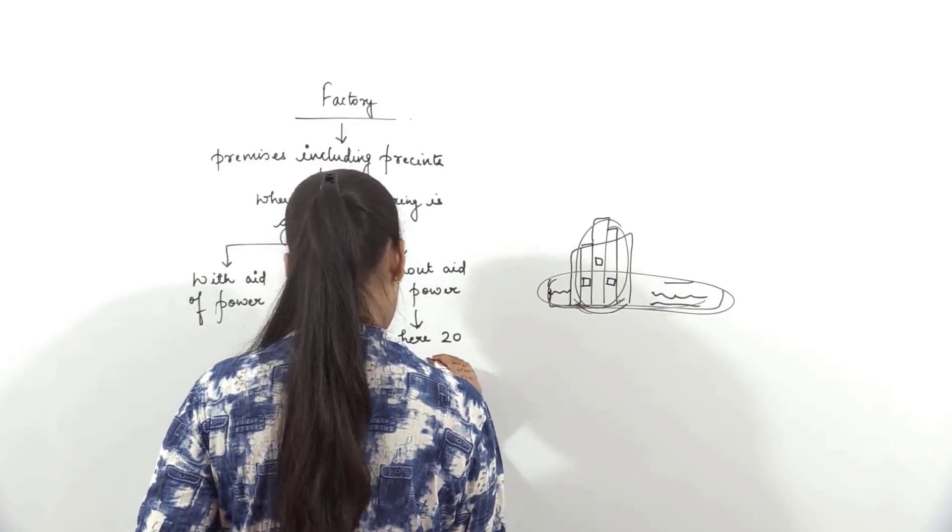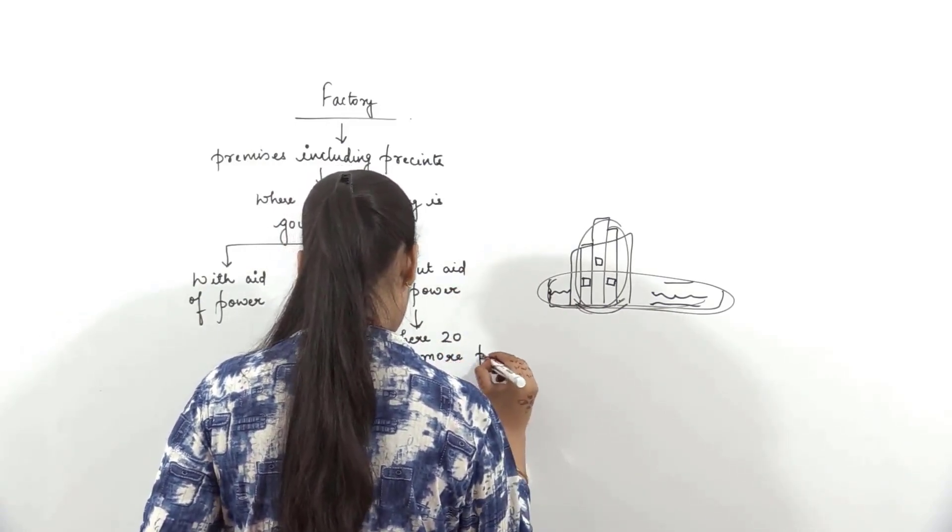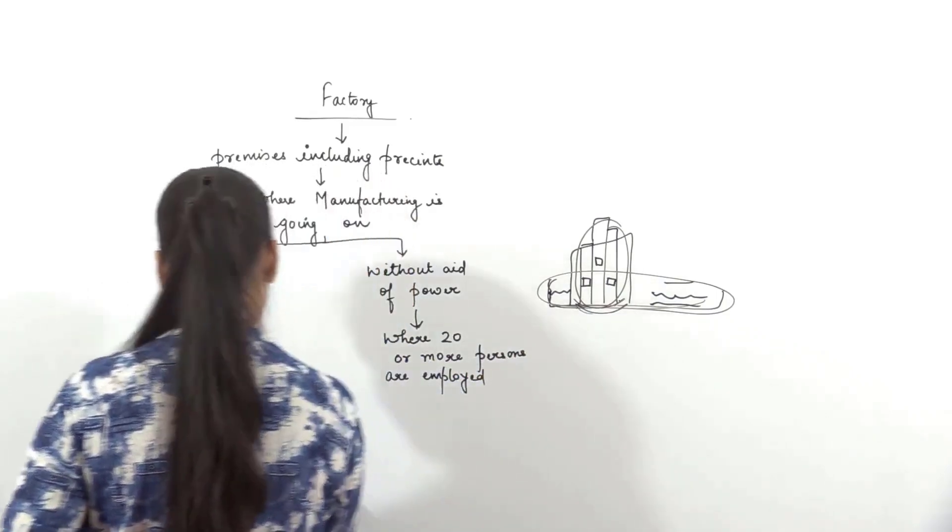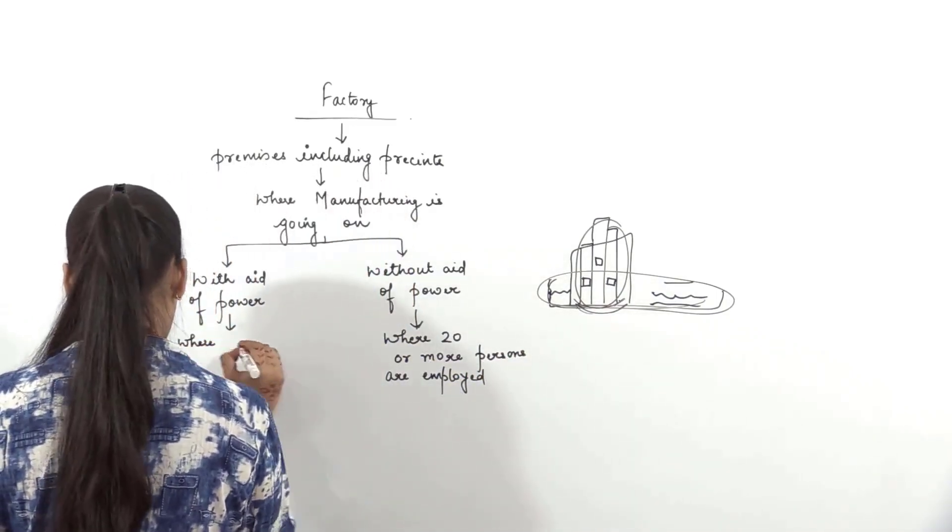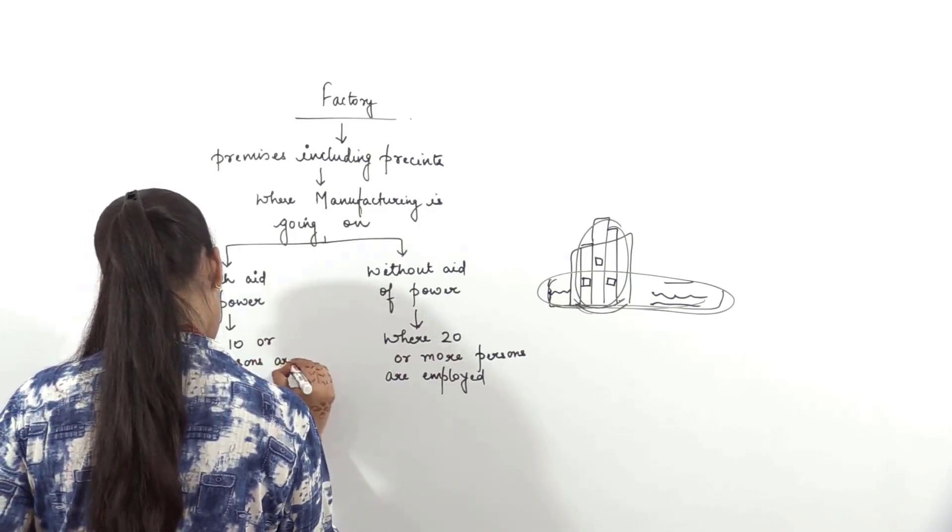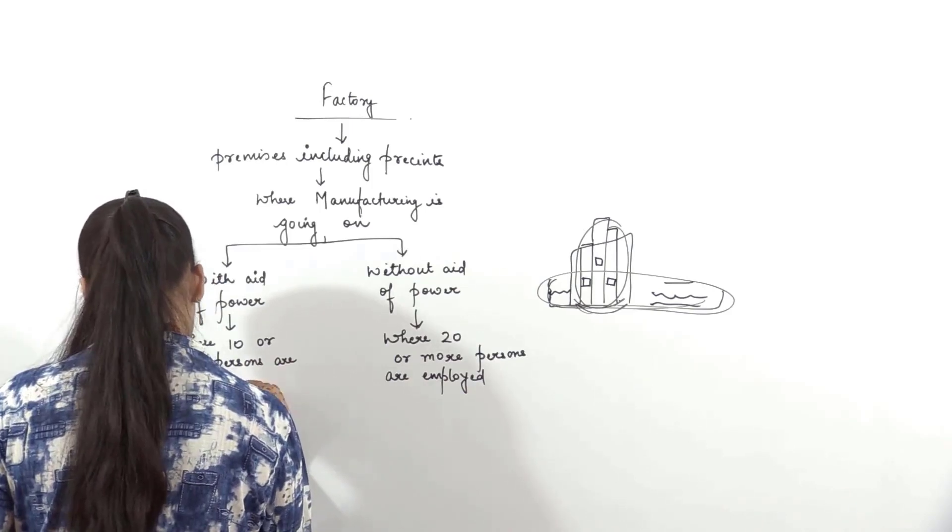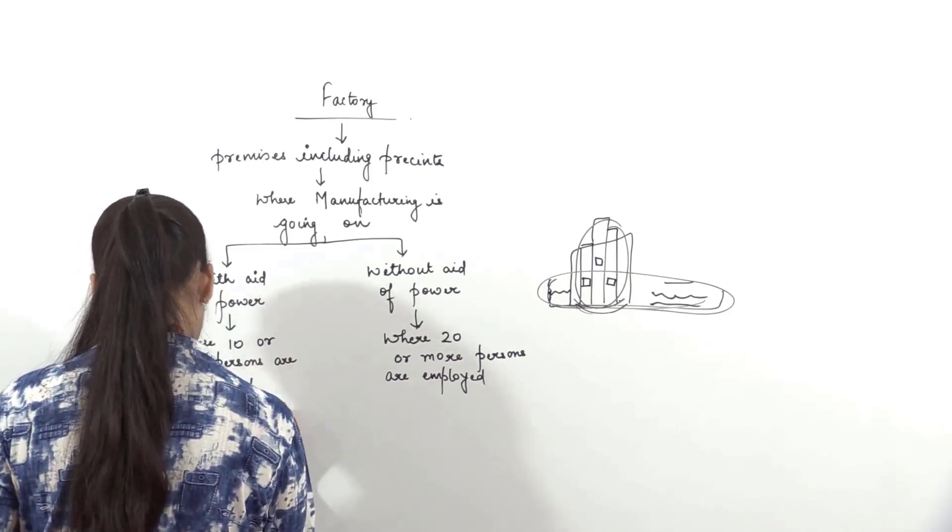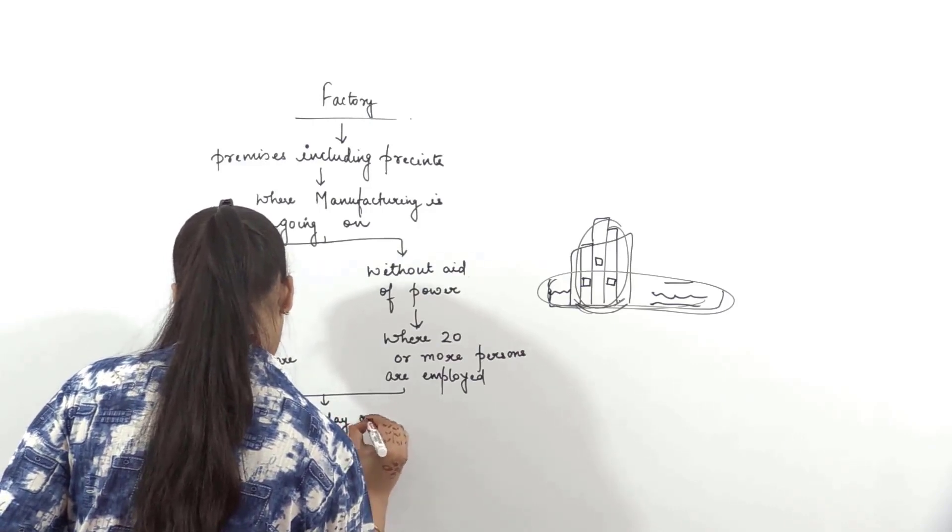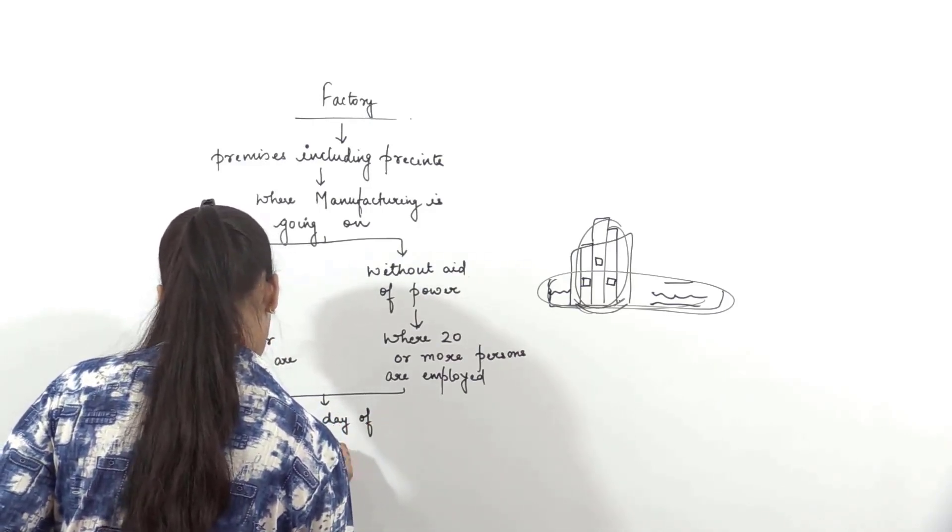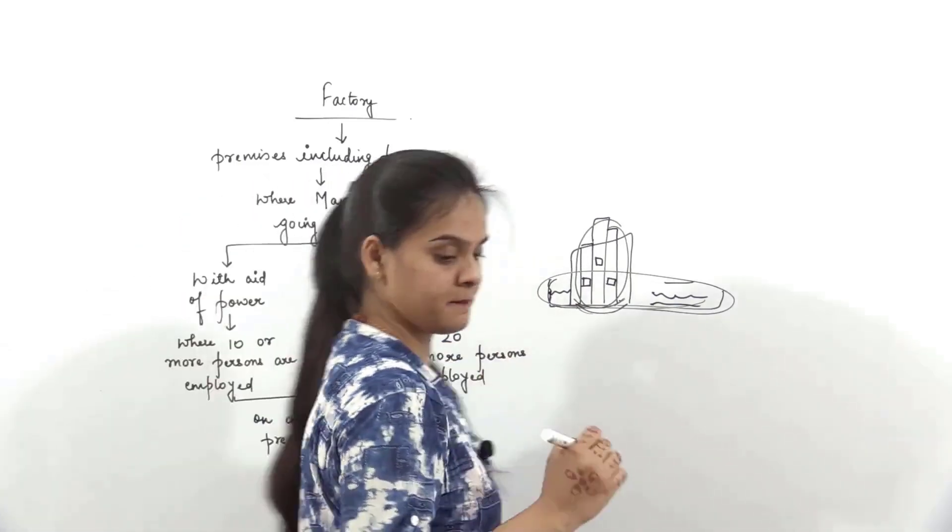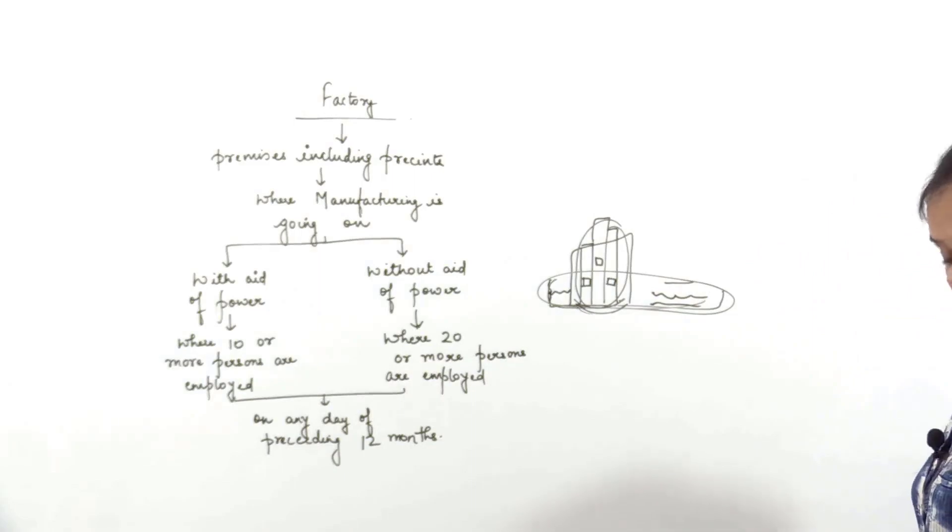Where twenty or more persons are employed on any day of the preceding twelve months. With power, 10 or more. Without power, 20 or more persons are employed on any day of preceding 12 months. Samajh mein hai?